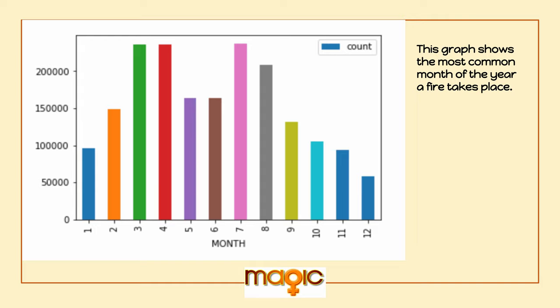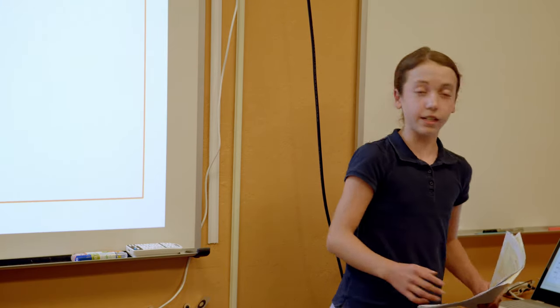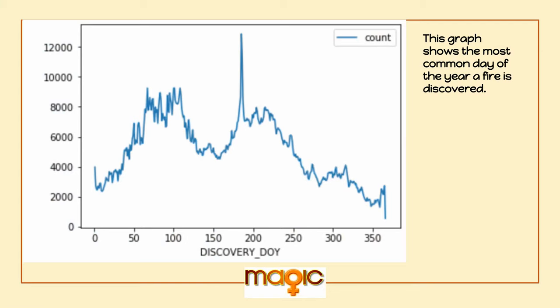Here we can see the different months of the year a wildfire takes place. The most common month is July, which is not very surprising, but then also March and April. And here, this graph shows the most common day of the year of fires discovered, which is about the 175th, 180th day of the year.